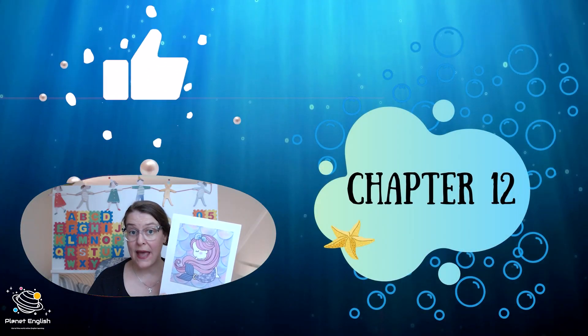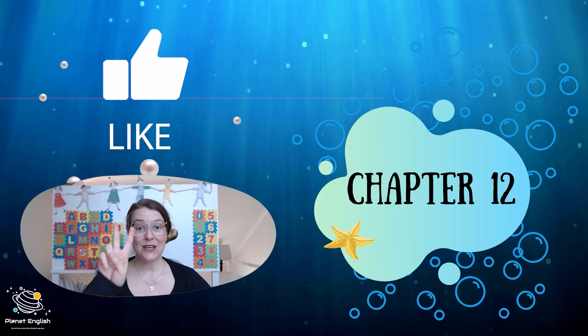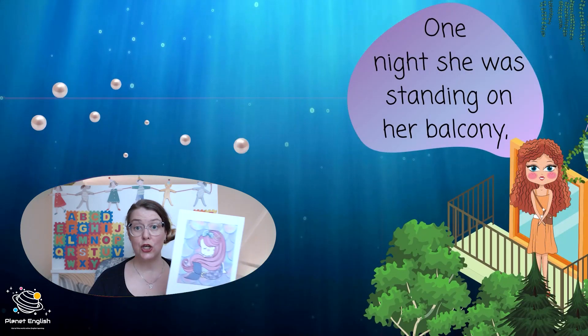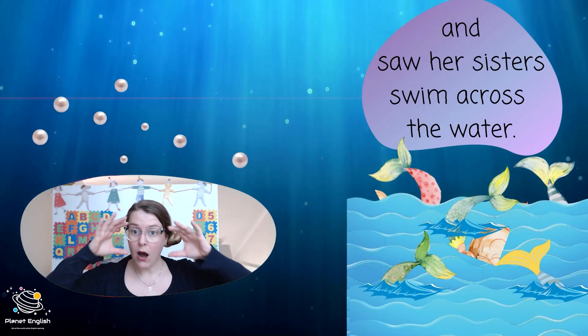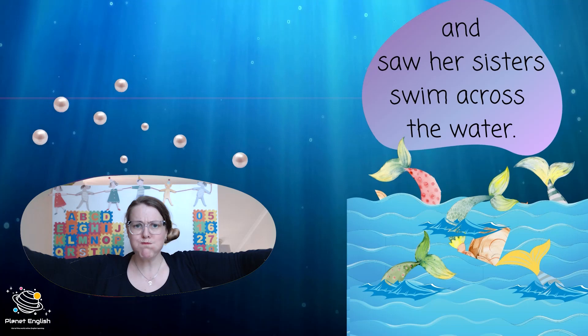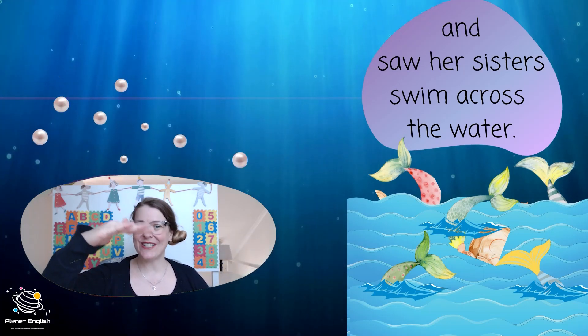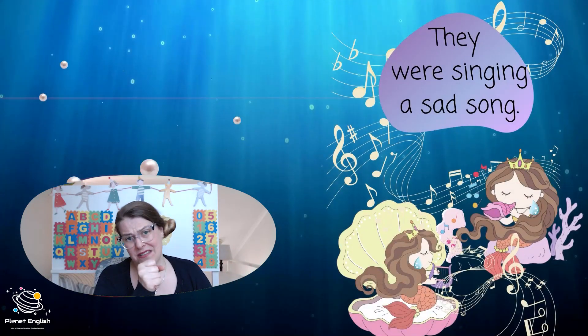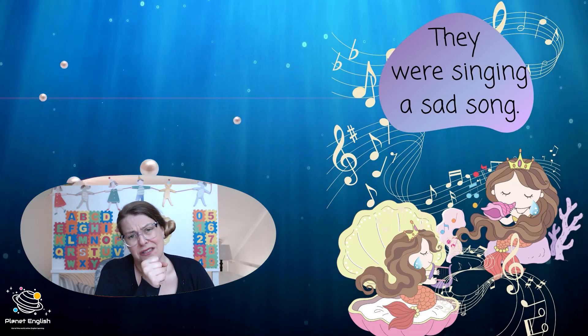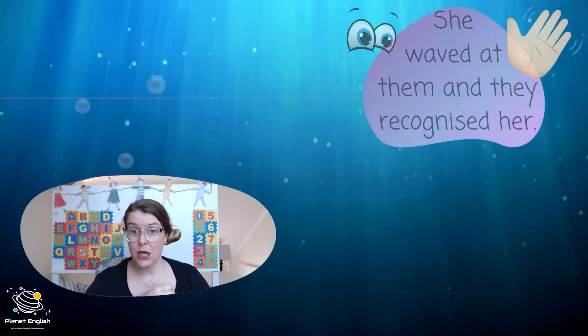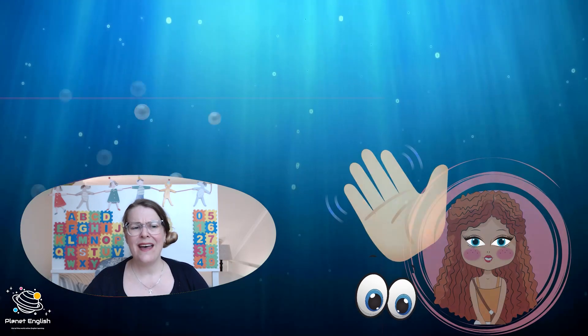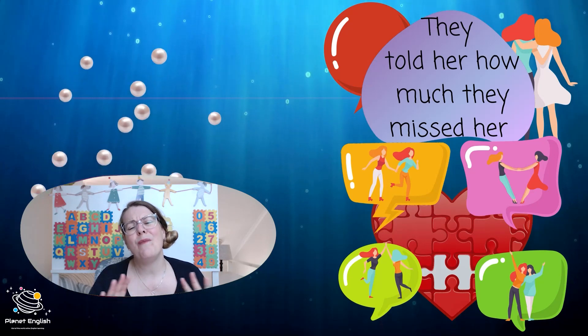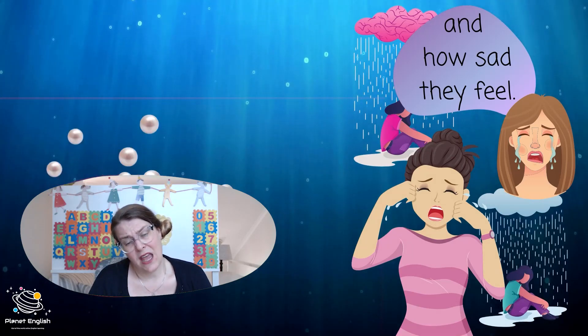The Little Mermaid, Chapter 12. One night she was standing on her balcony and saw her sisters swim across the water. They were singing a sad song. She waved at them and they recognized her. They told her how much they missed her and how sad they feel.